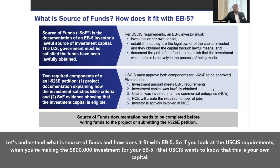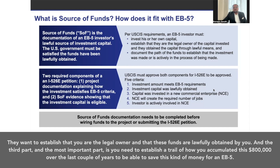Let's understand what source of funds means and how it fits with EB5. If you look at the USCIS requirements, when you're making the $800,000 investment for your EB5, the USCIS wants to know that this is your own capital. They want to establish that you are the legal owner and that these funds were lawfully obtained by you. The third and most important part is that you need to establish a trail of how you accumulated this $800,000 over the last couple of years.